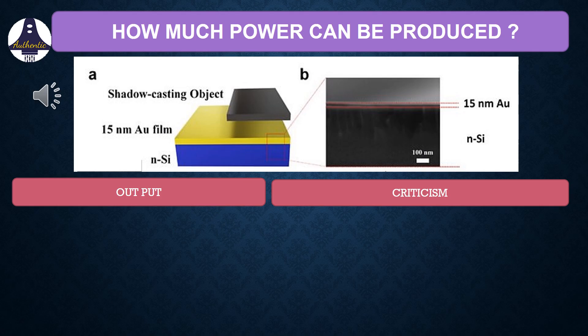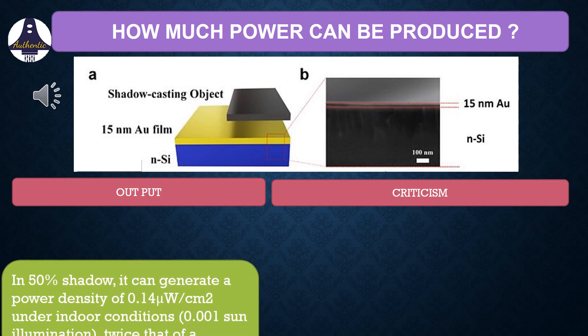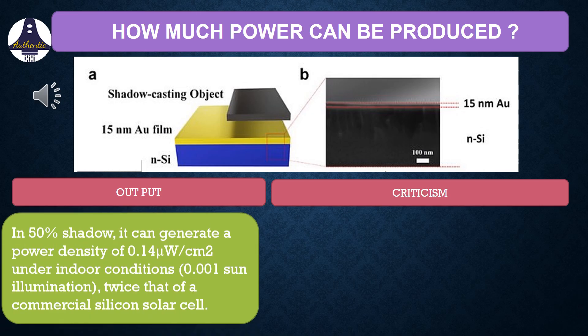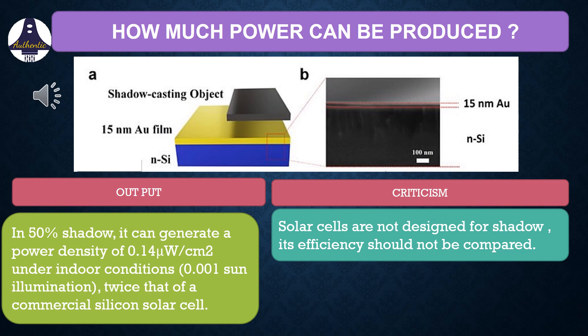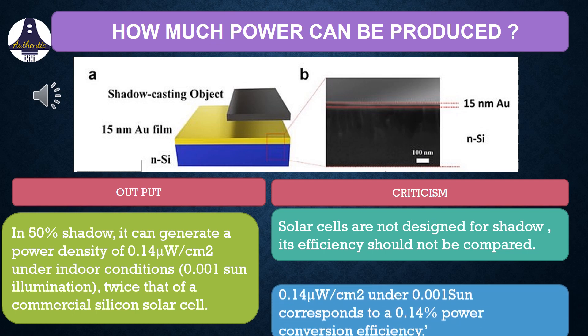How much power can be produced? In 50% shadow, it can generate a power density of 0.14 microwatt per centimeter square under indoor conditions, which is twice that of a commercial silicon solar cell. But solar cells are not designed for shadow, so its efficiency should not be compared.